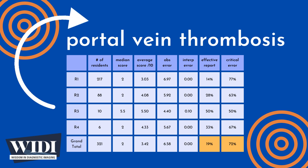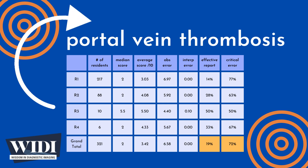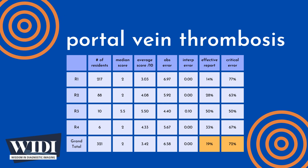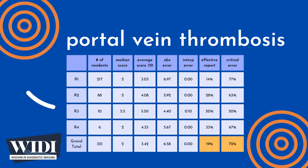We define a report having a critical error to be one with scores between 0 and 2 — in terms of letter grades, this would be D and F. In this most missed case, 72% of residents produced reports with critical errors.